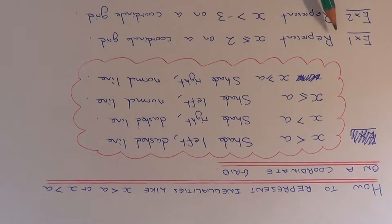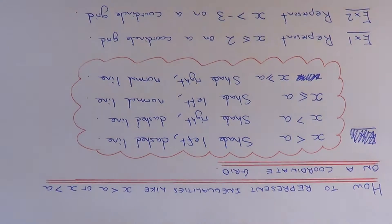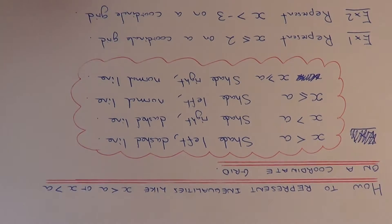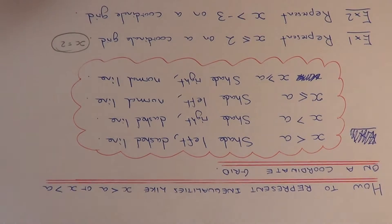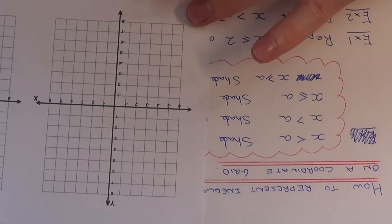So let's look at our two examples. Example one: we need to represent x is less than or equal to 2 on a coordinate grid. First of all we need to think about how we draw the straight line x equals 2. You should know already that x equals 2 is just a vertical line going through the x-axis at 2.